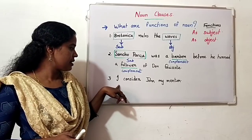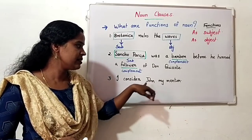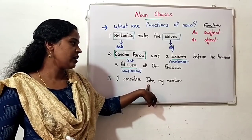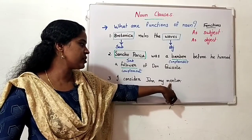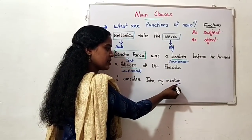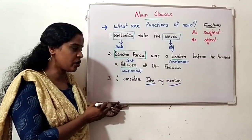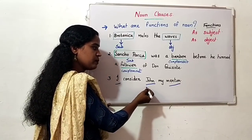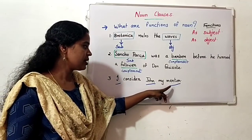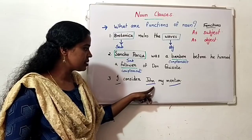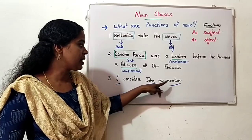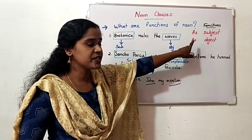See the third sentence: 'I consider John my mentor.' In this sentence, I is the subject and John is the object. We can see one more noun here — mentor. Mentor complements the object John; it explains something about John. So mentor is an object complement.